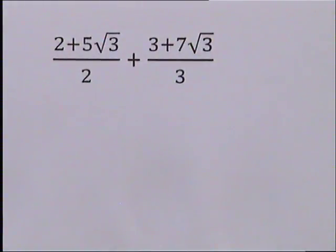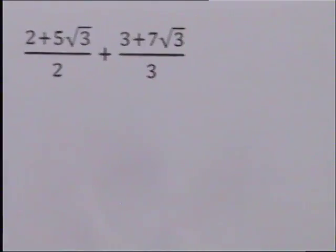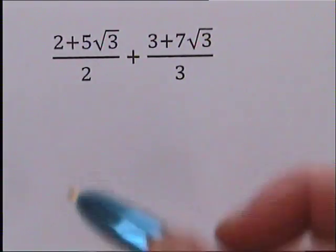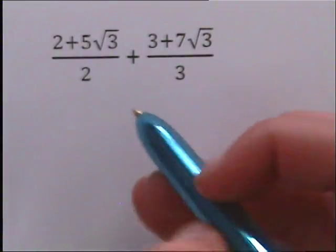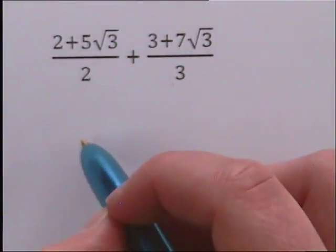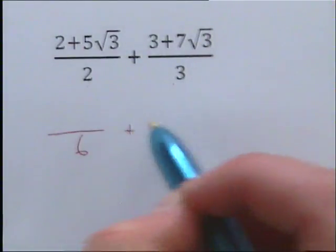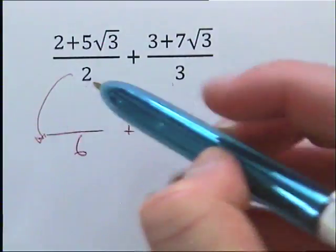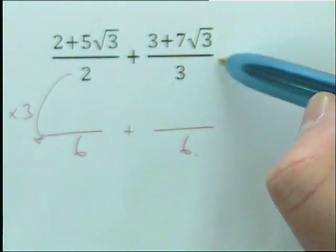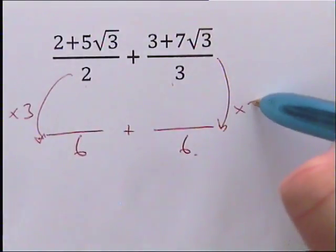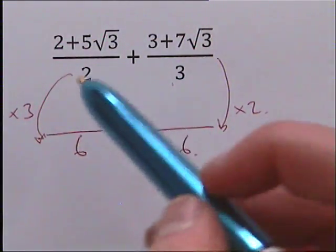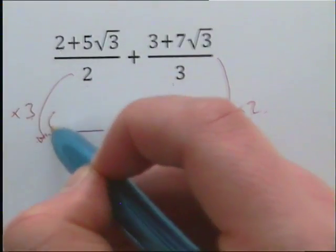Question 3. We're getting slightly more tricky again, but we're still just adding fractions. Our first thought should still be: how can we make our bottom two numbers the same? Multiply them together, so we should have 6 on the bottom plus 6 on the bottom. What did we have to times this fraction by? We times by 3. What did we have to times this fraction by? We times by 2.